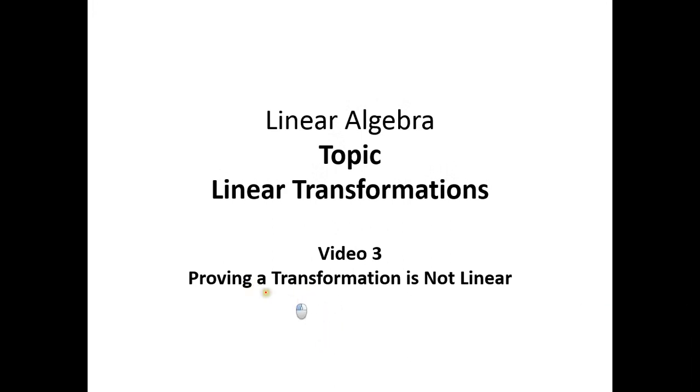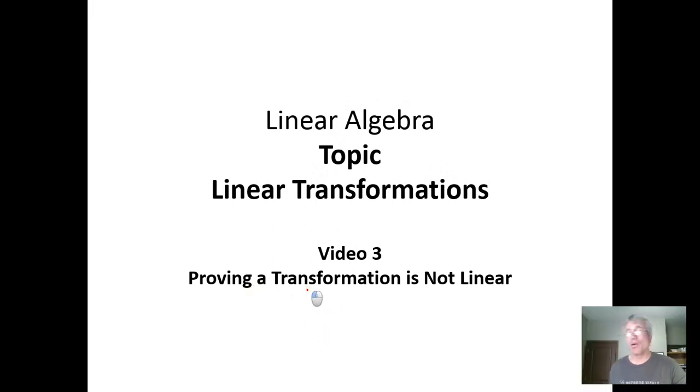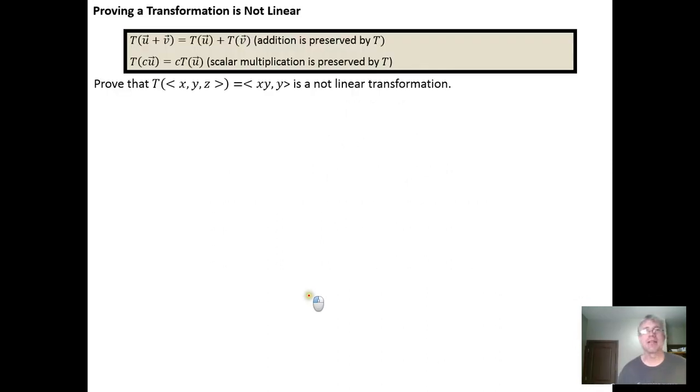In this video we'll prove how to demonstrate that a given transformation isn't linear. To prove that a given transformation isn't linear, we just need to demonstrate that either one of these two conditions don't hold.